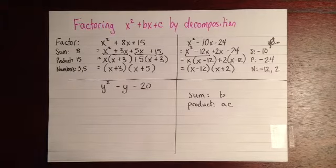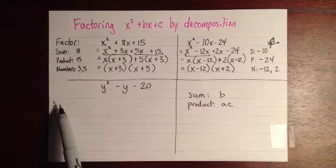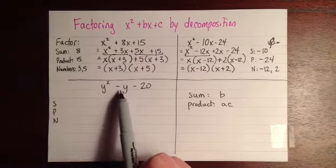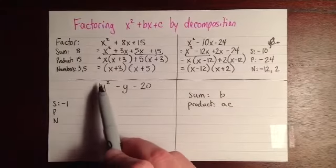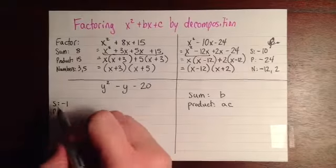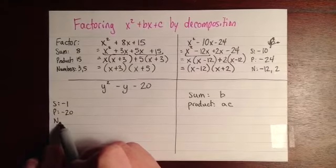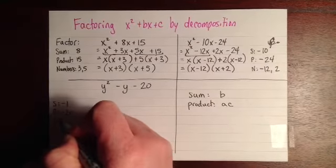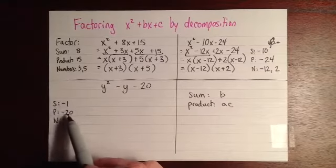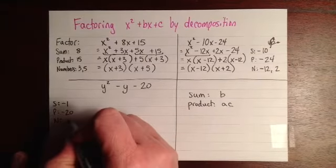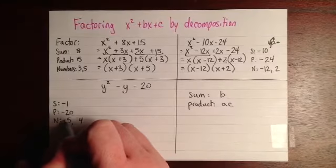I'll do one more. So write down my little SPN abbreviation for the sum, product, and numbers. The sum is going to be the b term, and here that's negative 1 because we have negative 1y. The product is going to be a times c, so it's 1 times negative 20, which is negative 20. And then we go through all the different things that multiply to negative 20, and we're looking for some that also add to negative 1. And so 5 and 4 are 1 away from each other, so that will give us, because the signs are different, that will give us the sum of negative 1. We just have to check the signs. If we want them to add to negative 1, we'll use negative 5 and positive 4.